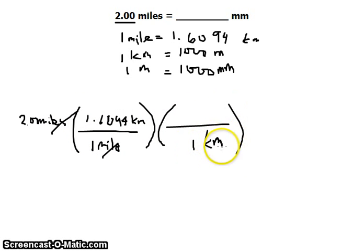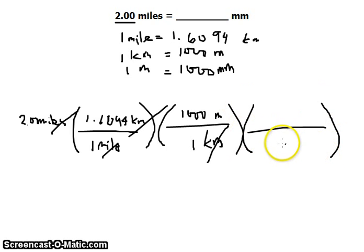The kilometer to meter conversion: 1 kilometer is equivalent to 1,000 meters, so kilometers cancel out. Then we multiply by another conversion factor from meters to millimeters, where 1 meter equals 1,000 millimeters.